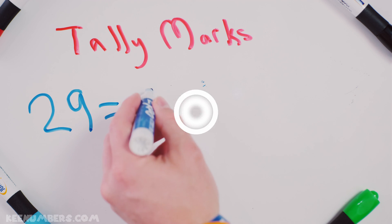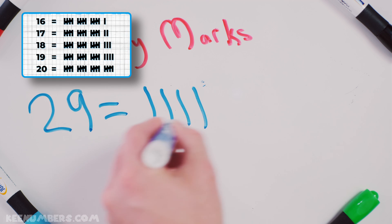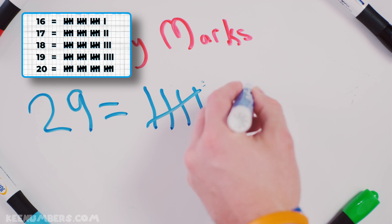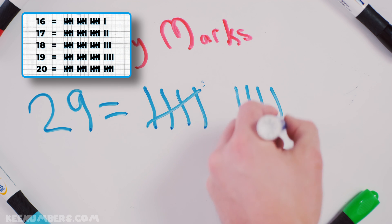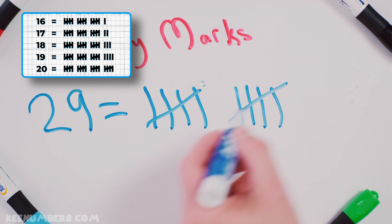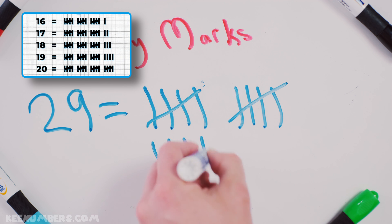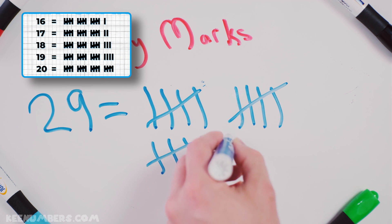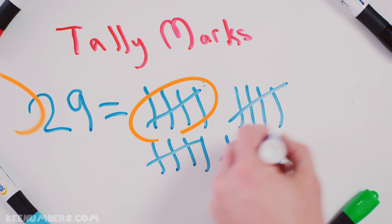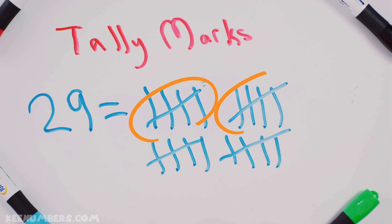29. Here we go. Let's do 5. Remember, diagonal line every time you do 5. So we got 5, we got 10. We're going to keep going — 15. You do 4 more, you put a line through it — 20.